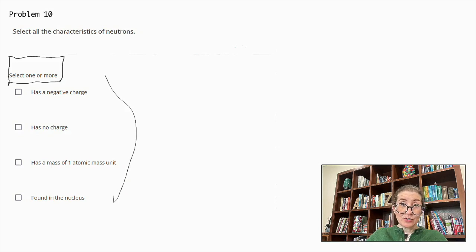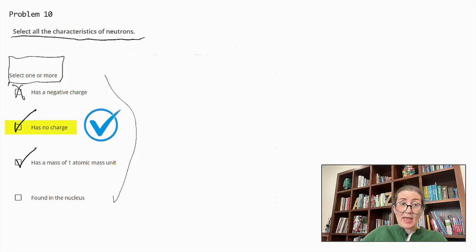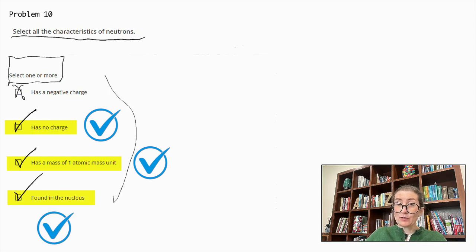So let's look at the answers now. Has a negative charge. Has no charge. Has a mass of one atomic mass unit. And or found in the nucleus. So let's read our question again. Select all the characteristics of neutrons. Neutrons. So we can eliminate has a negative charge as we know it's a neutral particle. The correct answers are has no charge, has a mass of one atomic mass unit, and is found in the nucleus.